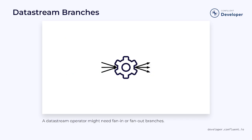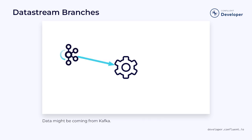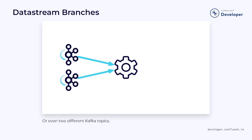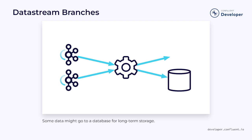Data streams have similar needs for both fan-in and fan-out branches. For example, you may want to take data from both a Kafka topic and a database and pipe it through the same stream, or from multiple topics or multiple databases. You also might want to send data to multiple locations — it's fairly common to send some data to a database for long-term storage but also to a Kafka topic for immediate downstream consumption. Each of these use cases requires us to create a branch in our stream.